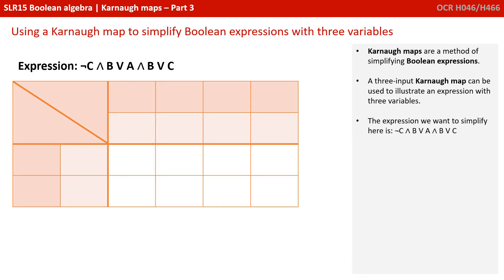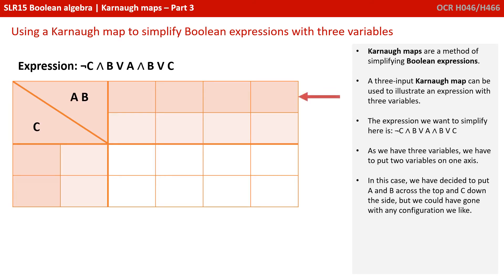The expression we want to simplify is going to be NOT C AND B, or A AND B, or C. As we have three variables, we have to put two across one axis. In this case, we've decided to put A and B across the top and C down the side, but we could have gone with any configuration we like.